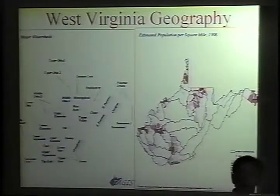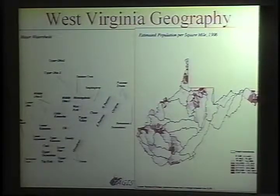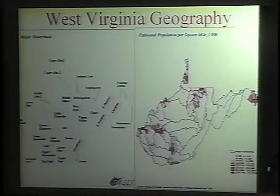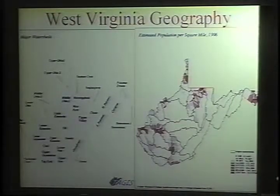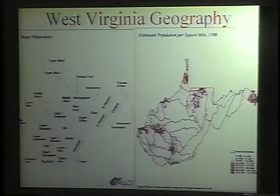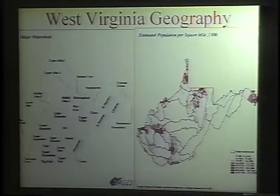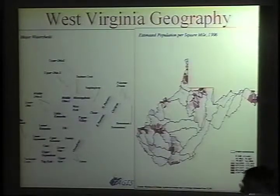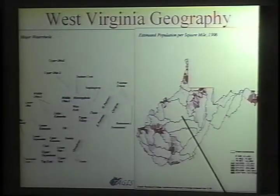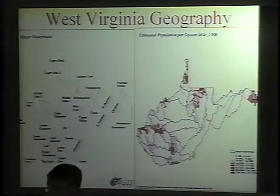West Virginia is a very distinctive, mountainous state. Looking at major river basins, we're focused on the Tigert Valley and Cheat River, the drainage basins forming the Monongahela, located in the east-central Allegheny Mountains. A population density map shows no major population centers — even Charleston is modest. The Tigert Valley River basin uniformly has population densities lower than 100 people per square mile, making it a relatively low-density region characteristic of Appalachia.